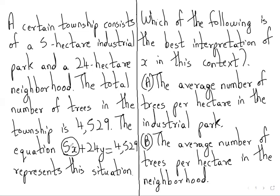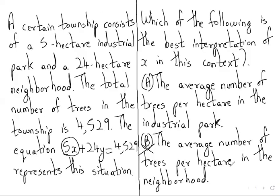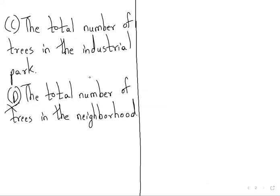So wherever there is neighbourhood, we will cancel it out. Option B we will cancel out, and Option D also — neighbourhood — we will cancel it out. Now Option A says the average number of trees per hectare in the industrial park, and Option C says the total number of trees in the industrial park.